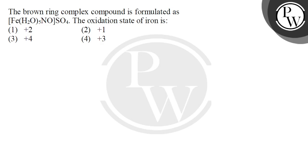Hello students, let's ask this question. The question says the brown ring complex compound is formulated as [Fe(H2O)5NO]SO4. The oxidation state of iron is - four options are given.